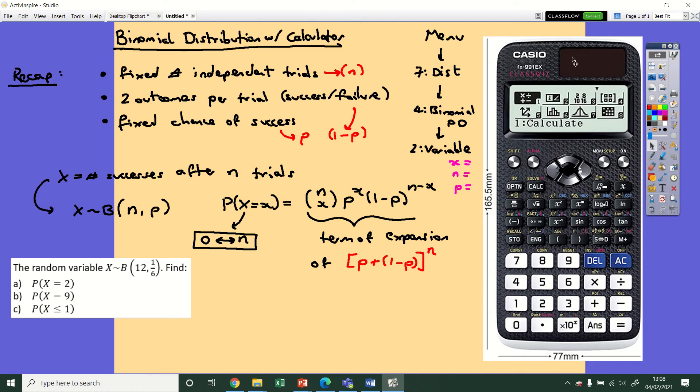So if you've got your Casio calculator handy, then I can show you how to get to the point where you can do calculations with this without having to write out the formula each time. If you firstly press menu, which is this button here, you're going to be brought to this page that shows all the different options. You're going to want to go to number seven, which is called distribution.